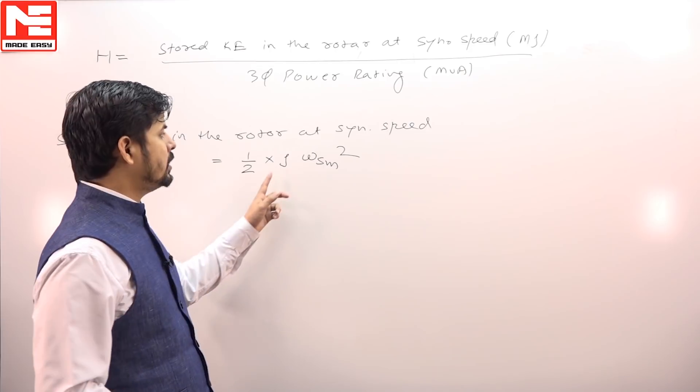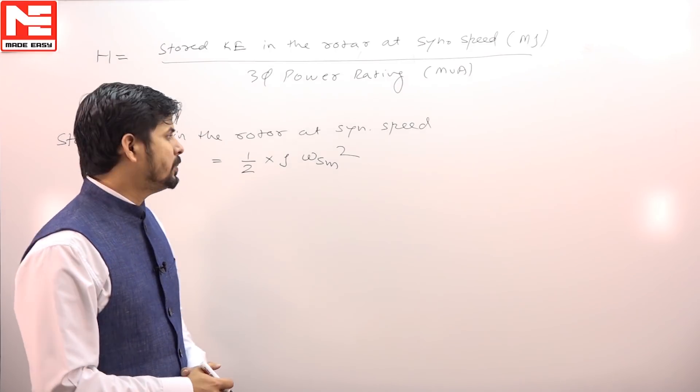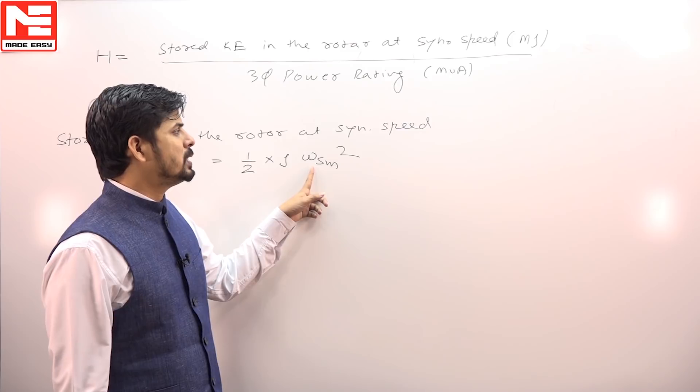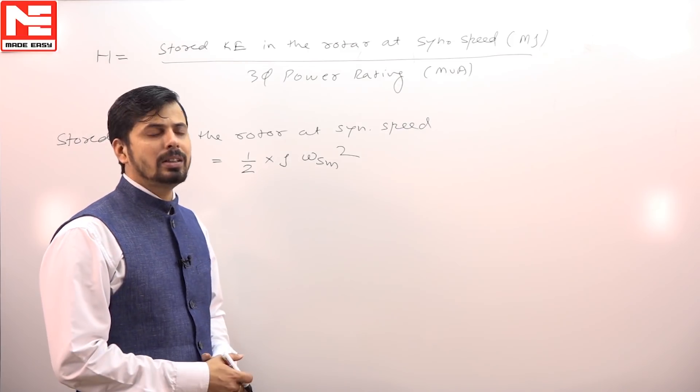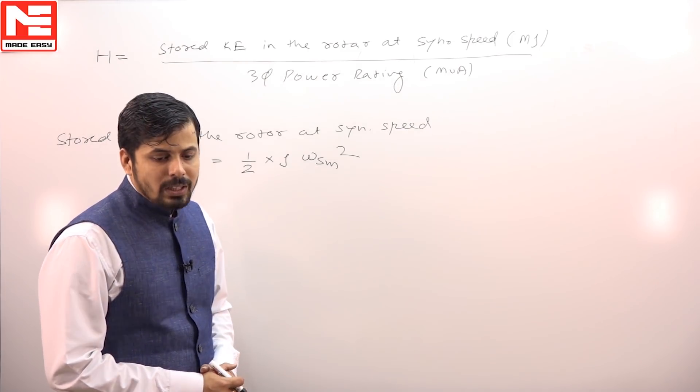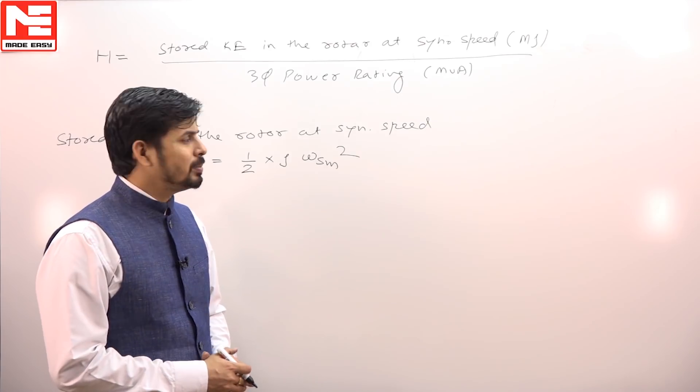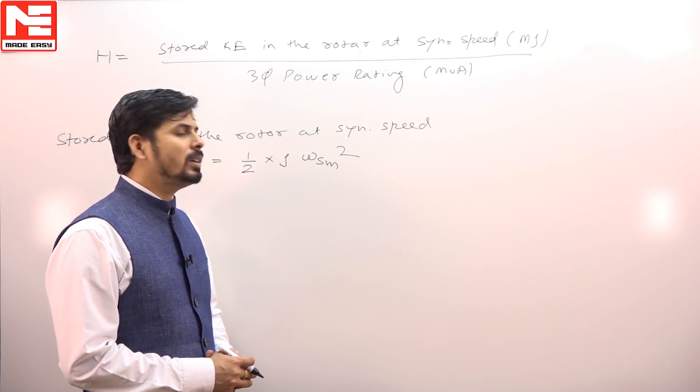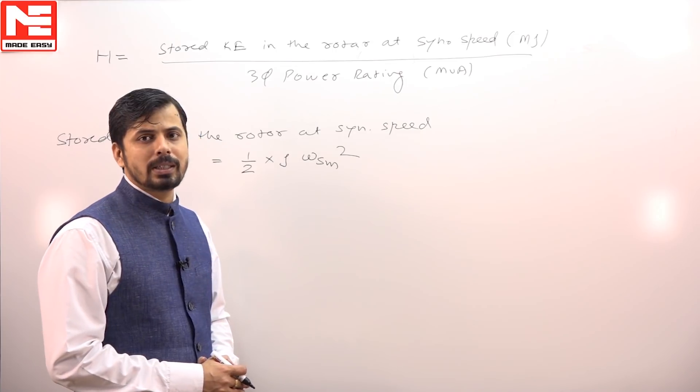J is the inertia, omega_sm is the synchronous speed in mechanical radians per second. For this two-pole generator, the speed in mechanical radians per second or electrical radians per second will be the same.